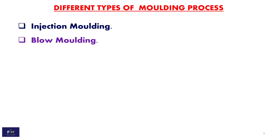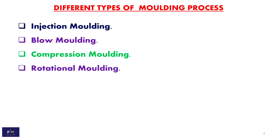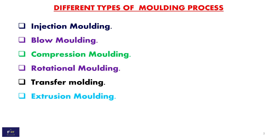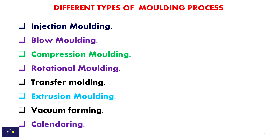Different types of molding process: injection molding, blow molding, compression molding, rotational molding, transfer molding, extrusion molding, vacuum molding, forming, and calendering. These are the different types of molding process.